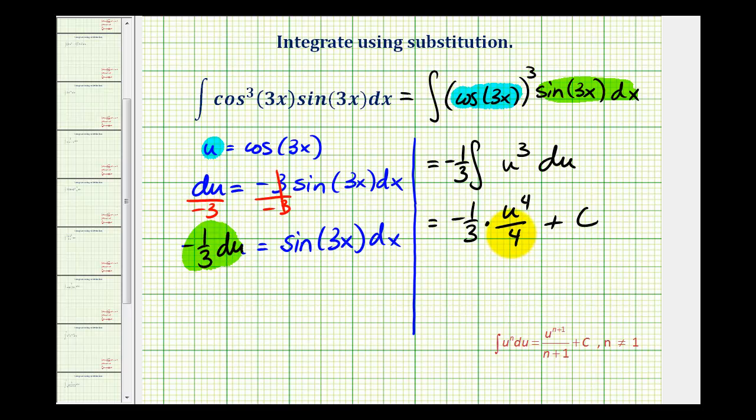And the last step is to rewrite this in terms of x. So, notice we'll have a coefficient of negative 1/12. And then, u is cosine 3x plus c.